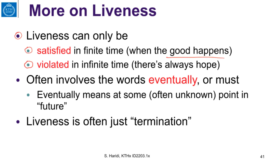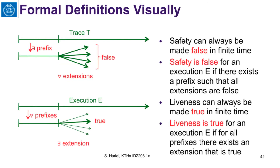Liveness, on the other hand, is a property that is satisfied in finite time when a good event happens, but violated in infinite time — there is always hope. We can always extend a prefix of an execution to satisfy the liveness property. Liveness often involves the words eventually or must, meaning at some unknown point in the future things will happen. Liveness properties can also simply be termination — saying that an algorithm will eventually terminate.